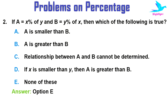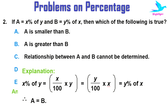Example two: if A is X percent of Y and B is Y percent of X, then which of the following is true? Option A: A is smaller than B. Option B: A is greater than B. Option C: relationship between A and B cannot be determined. Option D: if X is smaller than Y then A is greater than B. Option E: none of these. The right option is E. Now, X percent of Y equals X/100 into Y, which also equals Y/100 into X, which is Y percent of X. So X percent of Y and Y percent of X are equal, meaning A is also equal to B. Hence none of the options match.